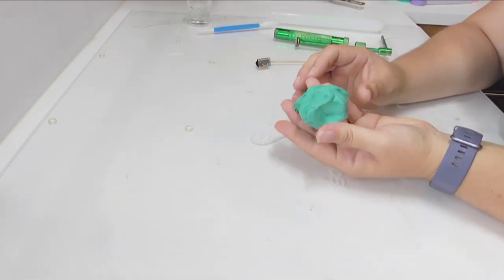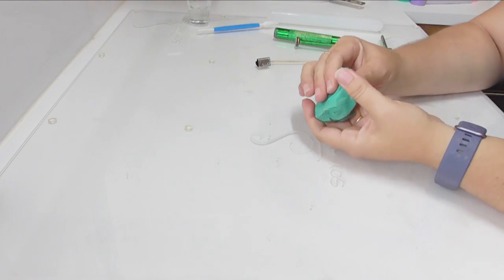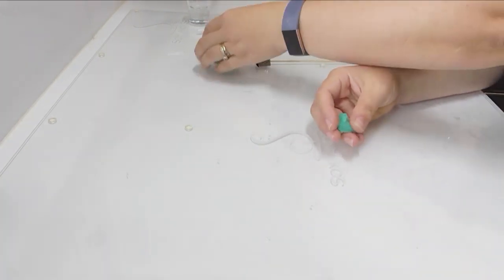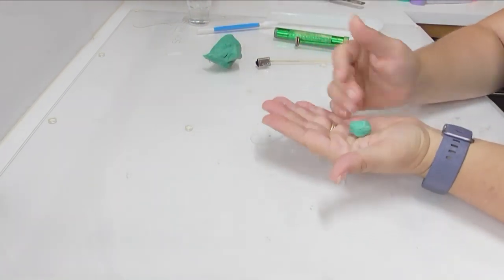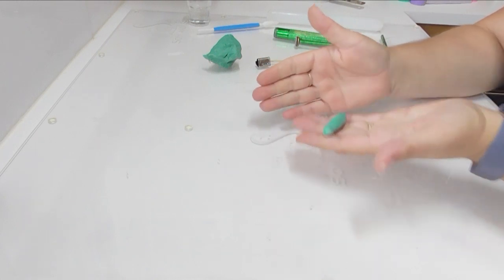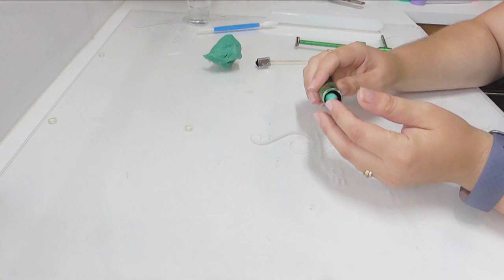Alright, so we've got our soap dough all ready to go and I'm using just the one color of green today. I'm going to start by breaking off just a very small amount of this. I really don't need that much for this bit of the clover. I am going to roll it up into a bit of a sausage shape and then I'm going to pop it into my extruder tool.